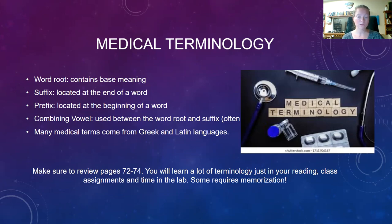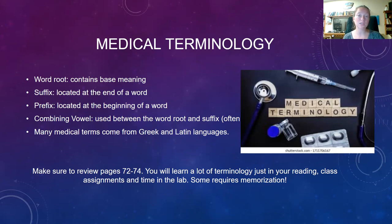Costectomy — cost refers to our ribs, and -ectomy means removal of, so costectomy means removal of the rib. A neurectomy — we already know -ectomy is removal of, and neur means nerve, so neurectomy means removal of a nerve. As phlebotomists, you're going to be required to recognize and use medical terms every day. Please review Table 4-2 in your textbook, pages 72 through 74. It does require memorization of these root words, suffixes, and prefixes that build medical words.